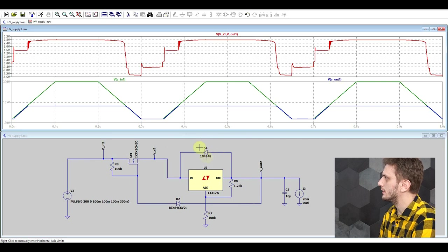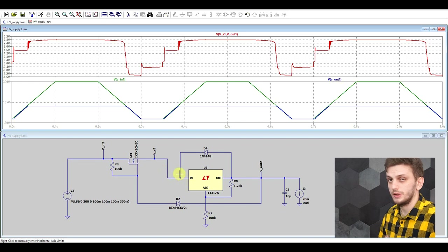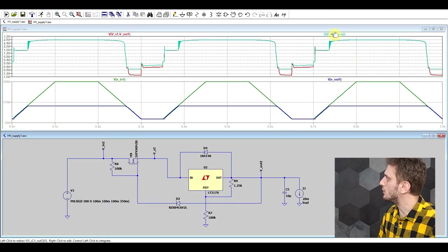So something like this. Here I added D4 between output and input, and what this is doing is limiting the voltage drop, so the one we see here in cyan, to about 0.7.